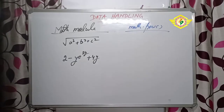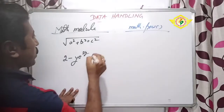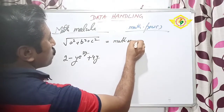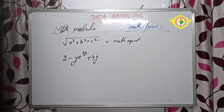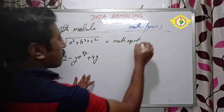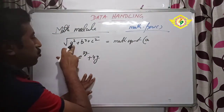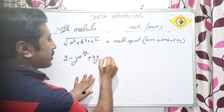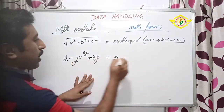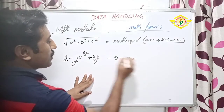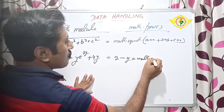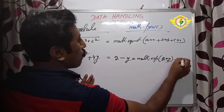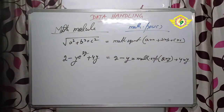Some examples now. First - square root of a squared plus b squared plus c squared. You write math.sqrt, then inside you write pow(a,2) or you can write a*a + b*b + c*c. Second example - 2 minus y, where E means exp, so you write math.exp(2*y) plus 4*y means 4 into y. 4y means one multiplication sign is there, so you have to write accordingly.